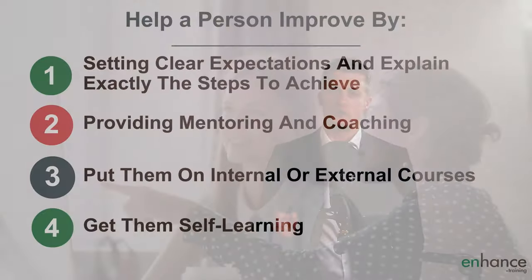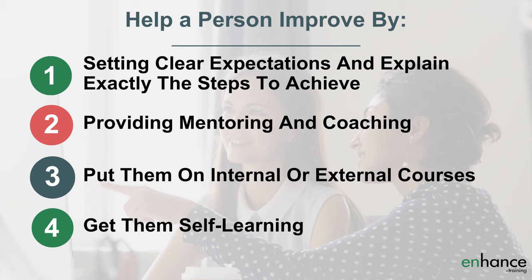There is loads you can do to help a person improve. Options include: firstly, setting really clear expectations and explaining exactly the steps they need to take to improve; secondly, providing mentoring and coaching from yourself or others in the business; third, putting them on an internal or external course; and fourth, getting them self-learning — give them a reading list, a video list, etc. — and request that they put the effort in to learn from them. If they don't have the potential to improve, then you have two main options left.